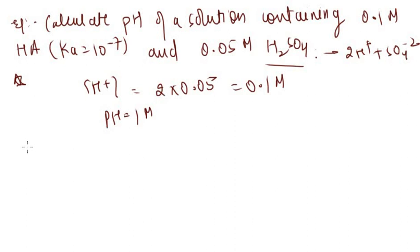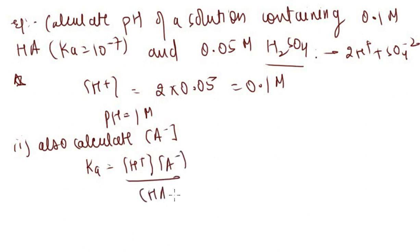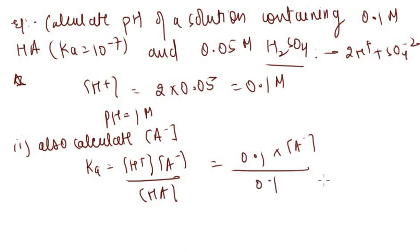For the second part, calculate [A⁻]. Ka = [H⁺][A⁻]/[HA]. [H⁺] = 0.1 M, [HA] = 0.1 M, Ka = 10⁻⁷. So [A⁻] = 10⁻⁷ M.